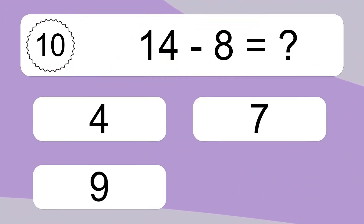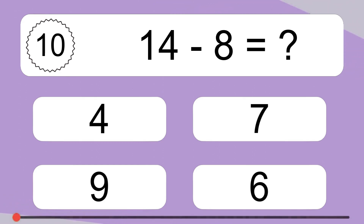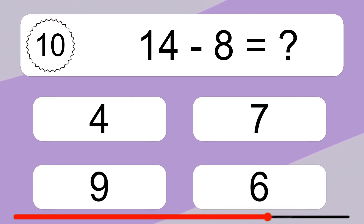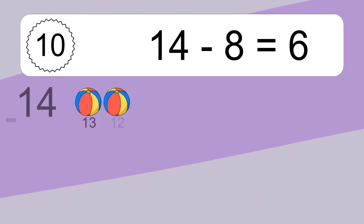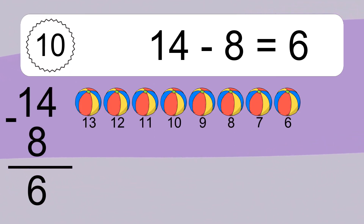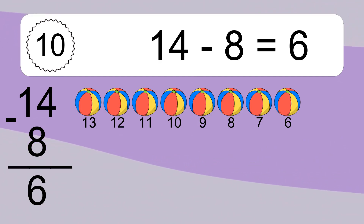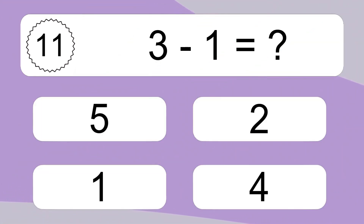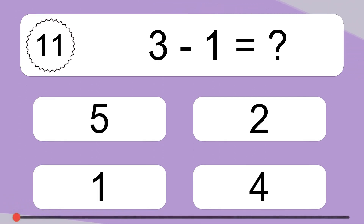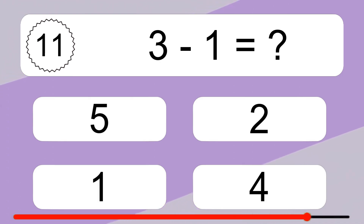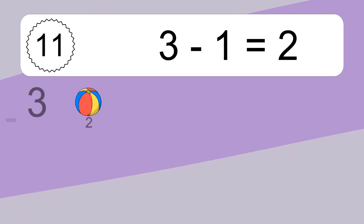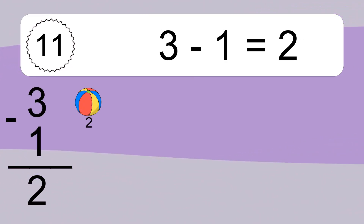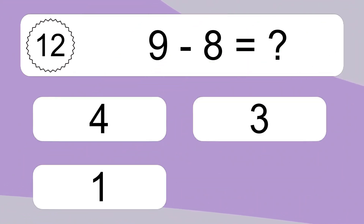14 minus 8 equals what? 14 minus 8 equals 6. Let's count it: 13, 12, 11, 10, 9, 8, 7, 6. 3 minus 1 equals what? 3 minus 1 equals 2. Let's count it: 2.